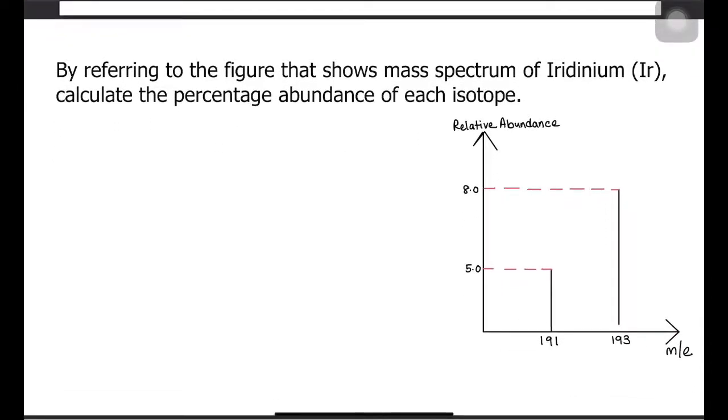The first question here shows the mass spectrum of iridinium and you are required to calculate the percentage abundance of each isotope. As you can see, a mass spectrum contains relative abundance and mass charge ratio. In order to calculate the percentage abundance, choose an isotope and compare its relative abundance with the total relative abundance.